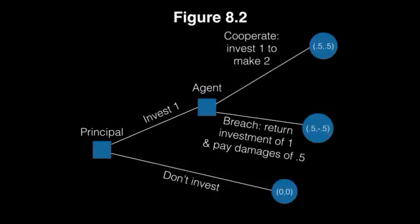Let's take a look at this scenario now overall. If the principal invests with the agent, what are they better off doing? Well, if they breach, they're out 0.5. If they cooperate and invest and the investment doubles, they get 0.5. So the agent would much rather make 0.5 than lose 0.5. Therefore, under the scenario of invest, the agent's best strategy is to cooperate.